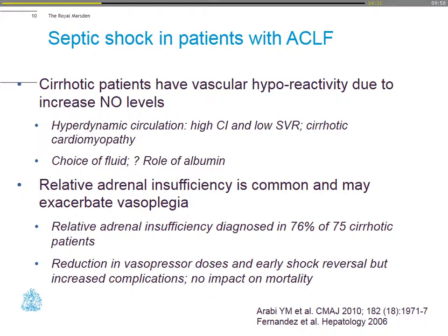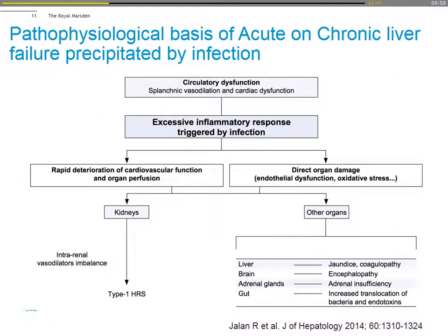Three-quarters of cases have relative adrenal insufficiency. Similar to the Cortica study, they saw a reduction in vasopressor use and early shock reversal when given steroids, but increased complications such as GI bleed with no impact on mortality. Remember, with the pathophysiology of patients with infection and acute-on-chronic liver disease, it's not just a hyperreactive state and release of cytokines, but also an anti-apoptotic state, which leads to direct organ damage with liver dysfunction, jaundice, coagulopathy, encephalopathy, adrenal insufficiency, and gut translocation.